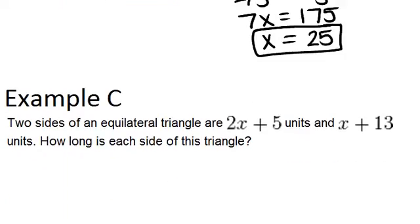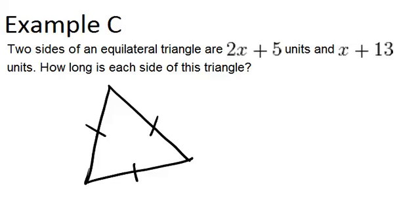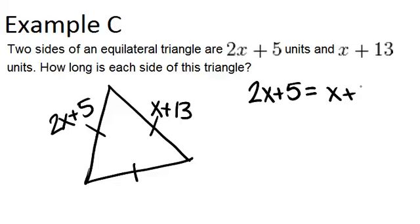Alright, let's go to example C. Two sides of an equilateral triangle are 2x plus 5 units and x plus 13 units. How long is each side of this triangle? So if it's an equilateral triangle, that means that all three sides are the same length. And we know that one side is marked as 2x plus 5, and another side is marked as x plus 13. But because all three sides are the same length, it means that 2x plus 5 must equal x plus 13.